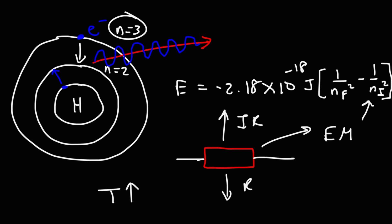So any time a charged particle is experiencing acceleration — whether it's moving from a high energy state to a low energy state, or if it's oscillating — it can emit an EM wave.